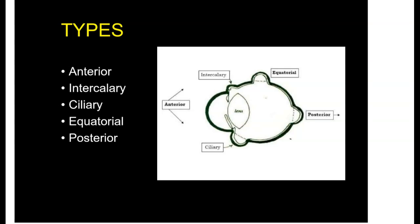Depending on the site of the weakness of the outer coat — whether the cornea is involved or the sclera is involved, and the distance of the site from the limbus — there can be five types of Staphyloma. In each of these five types, a different part of the uveal tissue will be incarcerated: sometimes the body of the iris, sometimes the root of the iris, or the ciliary body, or the choroid. The five types are: anterior, intercalary, ciliary, equatorial, and posterior.